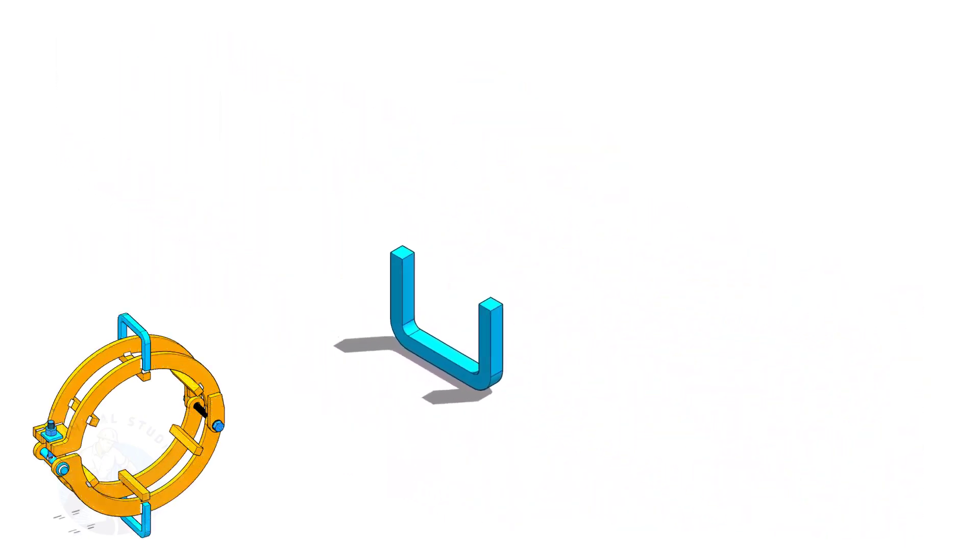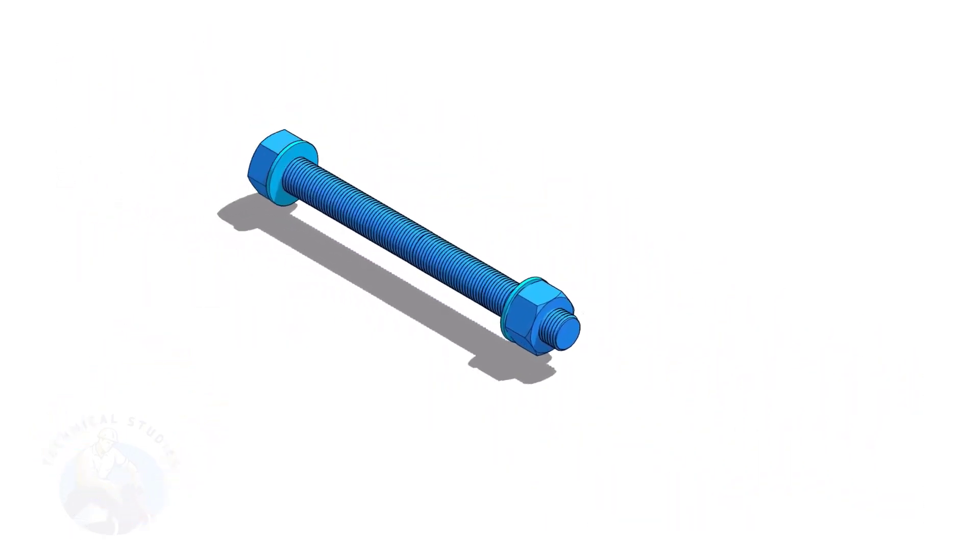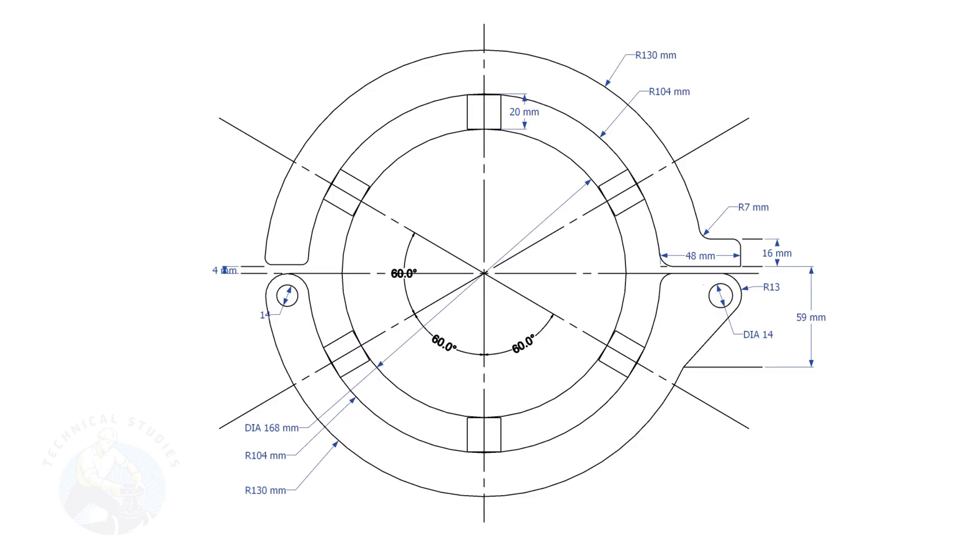Let us make the different parts of the pipe clamp. This is the main part of the clamp. I will explain to you how to layout this.